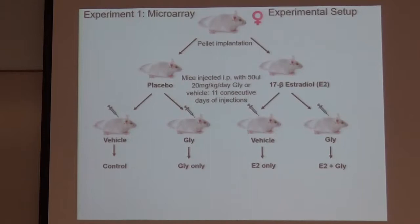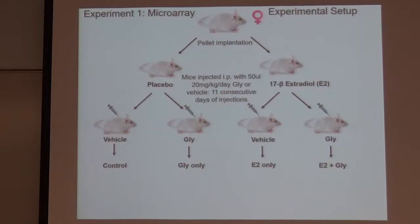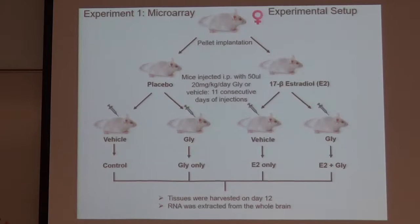After one week of rest, we had 11 consecutive days of intraperitoneal glyceolin or vehicle injections. So we had four groups: placebo pellets with vehicle (control), placebo pellets with glyceolin (gly-only), estradiol pellets with vehicle (estrogen-only), and estradiol pellets with glyceolin (estrogen plus glyceolin). We wanted to see what glyceolin does on gene expression compared to estrogen alone, and if it has anti-estrogenic effects, we expected it to suppress estrogen's upregulation of genes. After 11 days of injections, we harvested tissues on day 12 and extracted RNA from the whole brain.